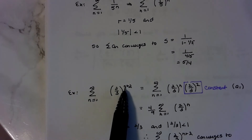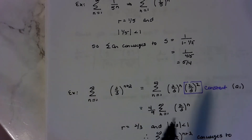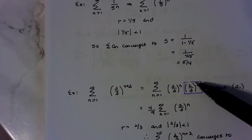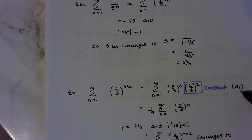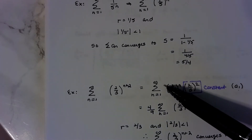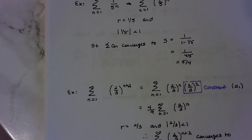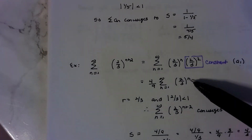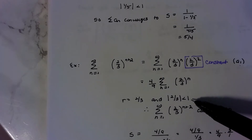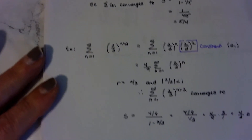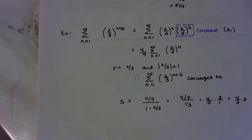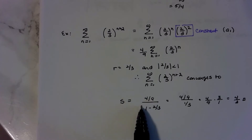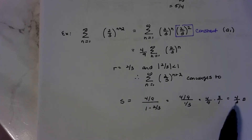Here's another one. I still have r to the n, even though there's n plus 2. We can rewrite this as 2 thirds to the n times 2 thirds squared, and that squared part is just a constant multiple — think of it as a sub 1. What we have is r equals 2 thirds. The absolute value of r is less than 1, so the series converges. If asked what it converges to: the first term is 4 ninths, divided by 1 minus r, and cleaning that up gives 4 thirds.